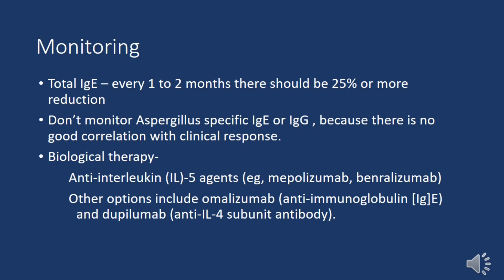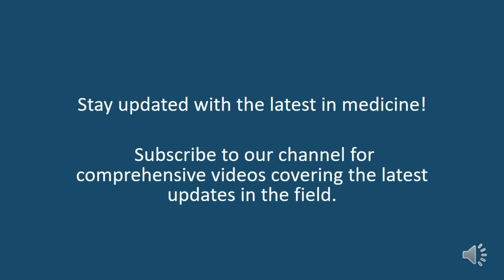Where conventional therapy is inadequate or not tolerated, biological therapy may be considered. Anti-IL-5 agents such as mepolizumab and benralizumab are among the biological therapies used in ABPA management. Other options include omalizumab, which targets IgE, and dupilumab, an anti-IL-4 receptor subunit antibody. Subscribe to the channel for comprehensive videos covering the latest updates in medicine.